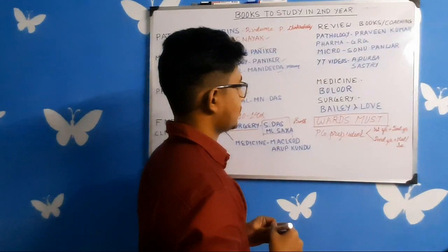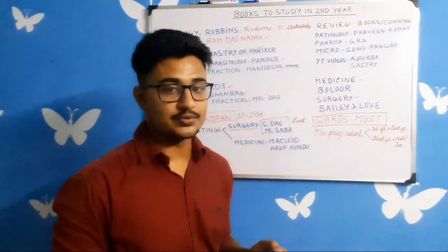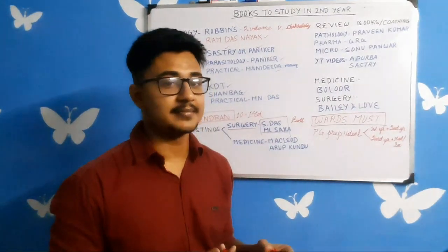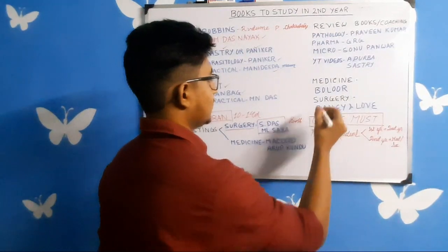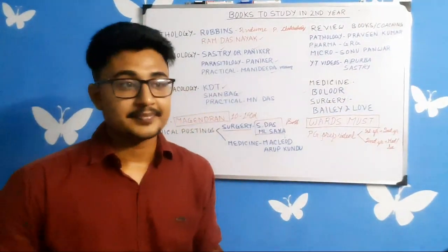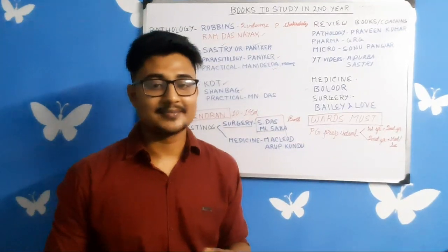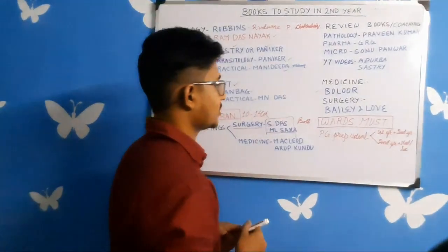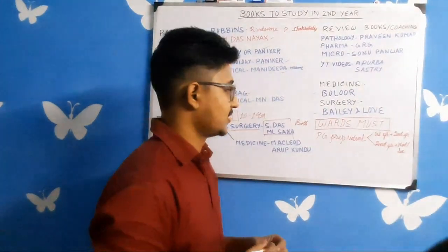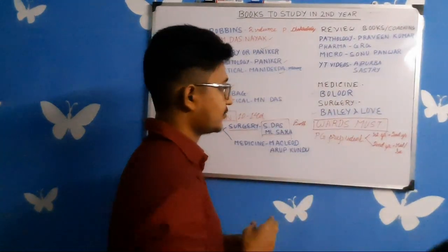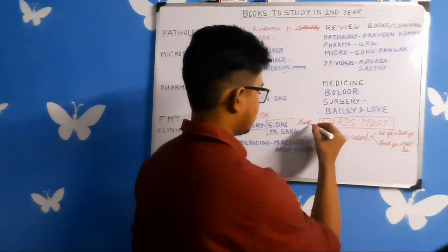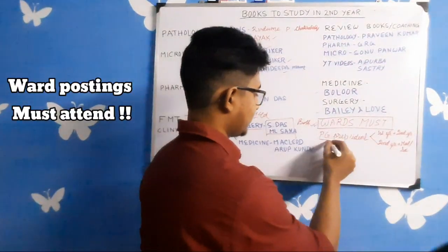For medicine, I am suggesting Bolur — not big names like Harrison, which is not possible to read in the whole MBBS, or Davidson, which is possible but not high-yielding. Bolur is a good book. For surgery, the standard textbooks are Bailey and Love — you can study any one of them. You cannot complete both medicine and surgery in this year, so study whichever one you pick, and ward postings are a must.